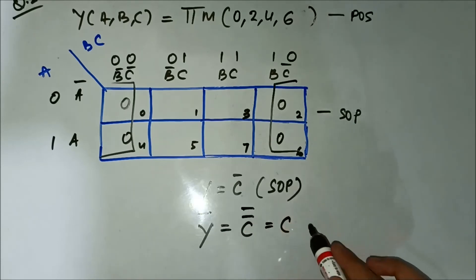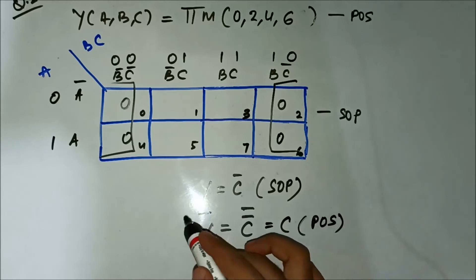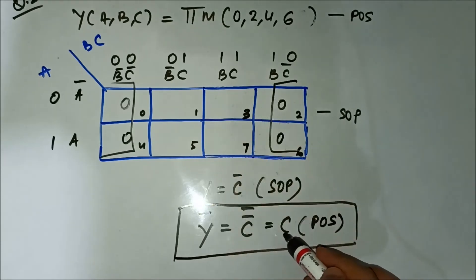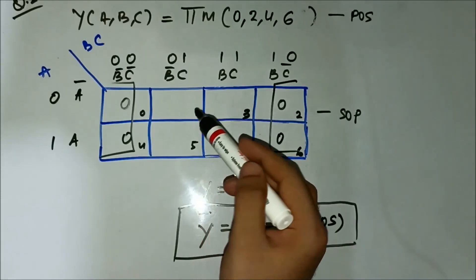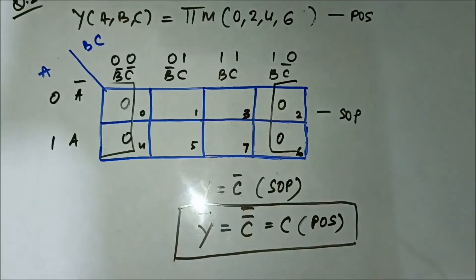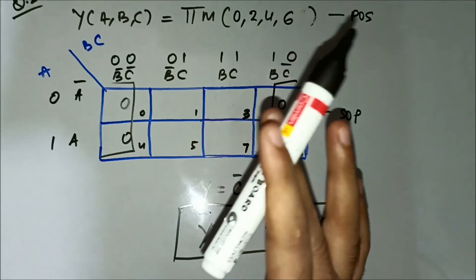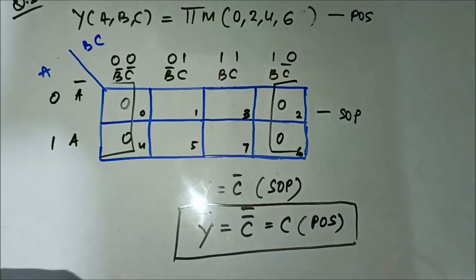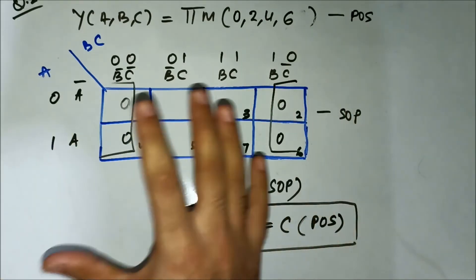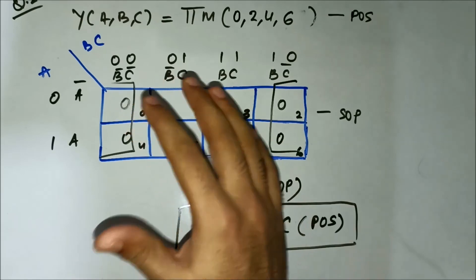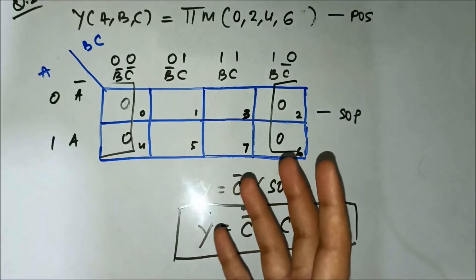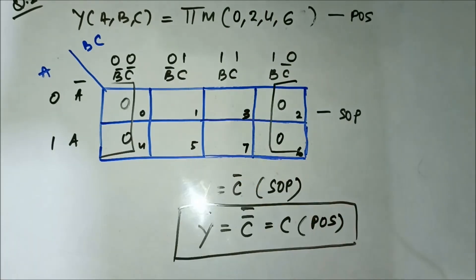To get the POS expression, we take the complement of C̄, which gives C double complement, equal to C. So C is the required simplified POS expression. This is simply an alternative method — if you are comfortable using SOP K-map, you can plot both SOP and POS expressions in it. Similarly, you can map SOP expressions in POS K-map. You have different options; which one you use is up to you.